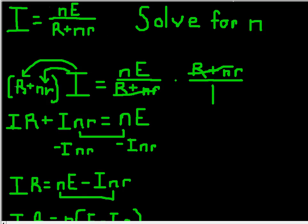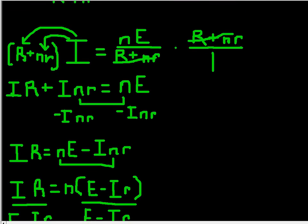We were left with nE. We multiplied the R plus nR on the other side, because you have to do everything to both sides or else it doesn't work. We distributed the I. So, IR plus INR.